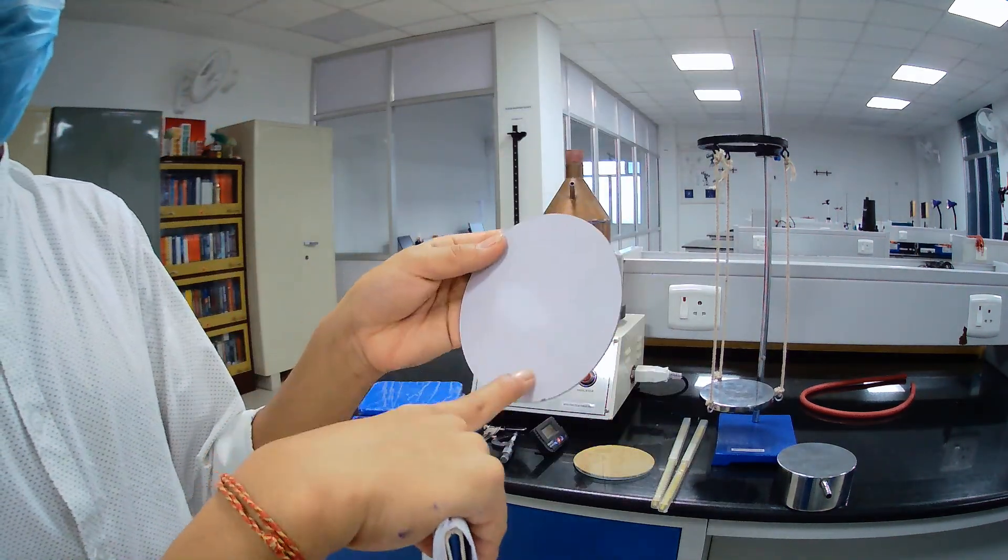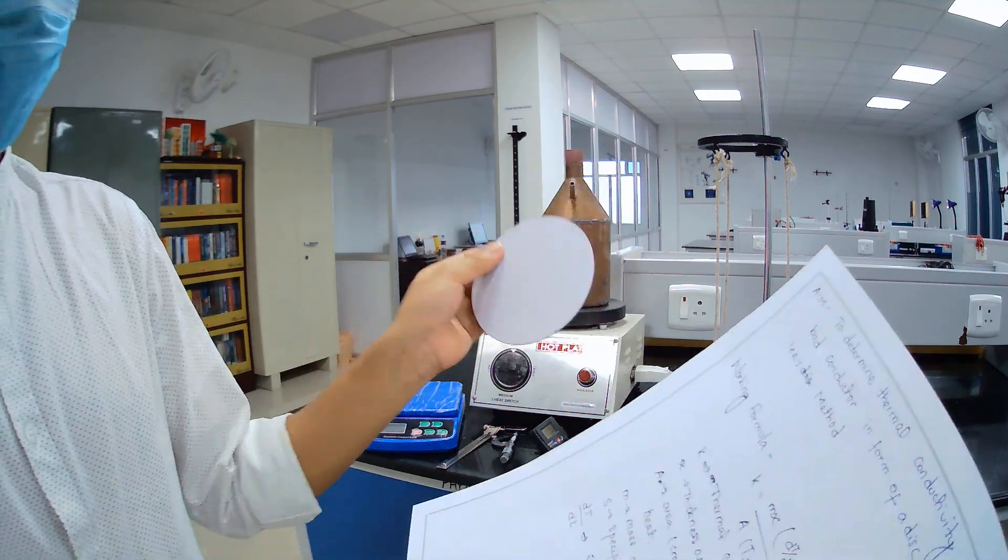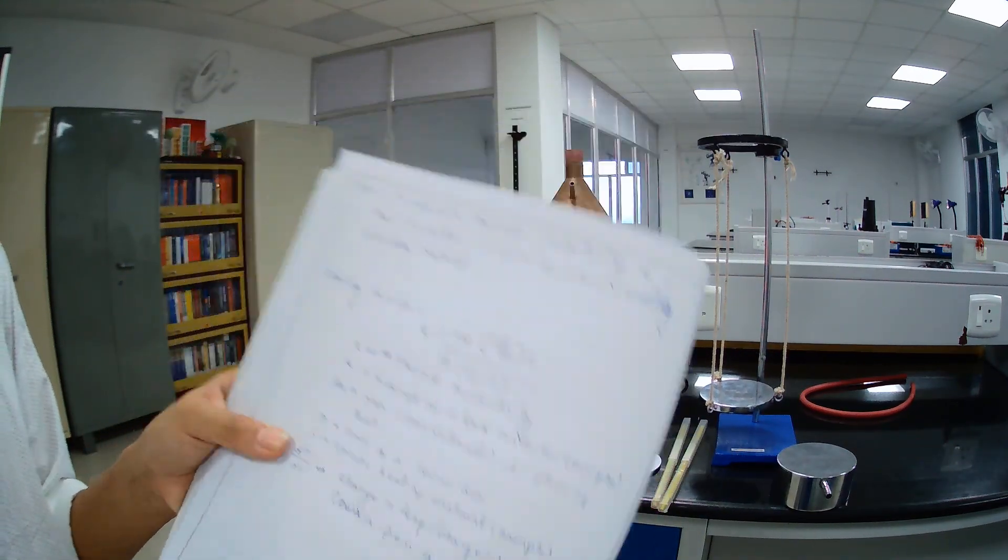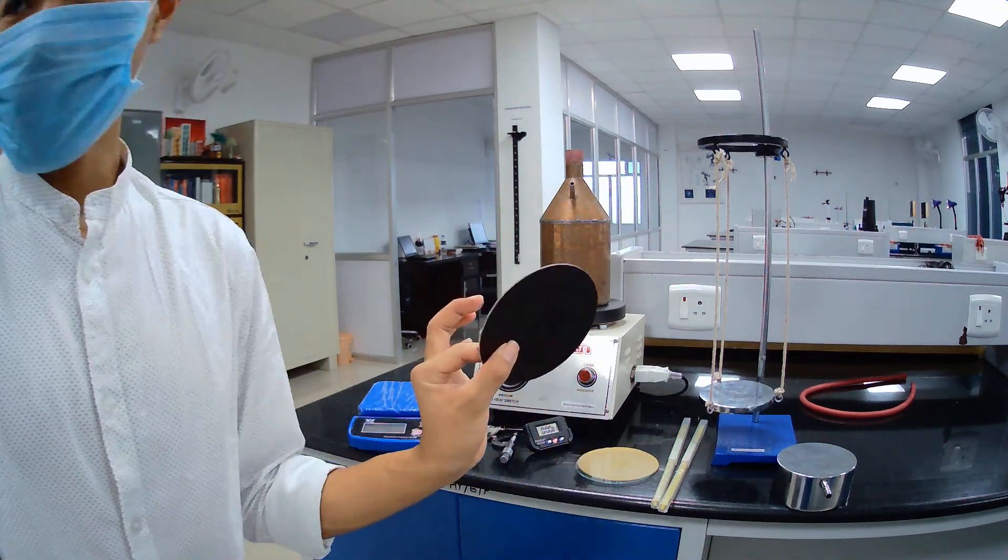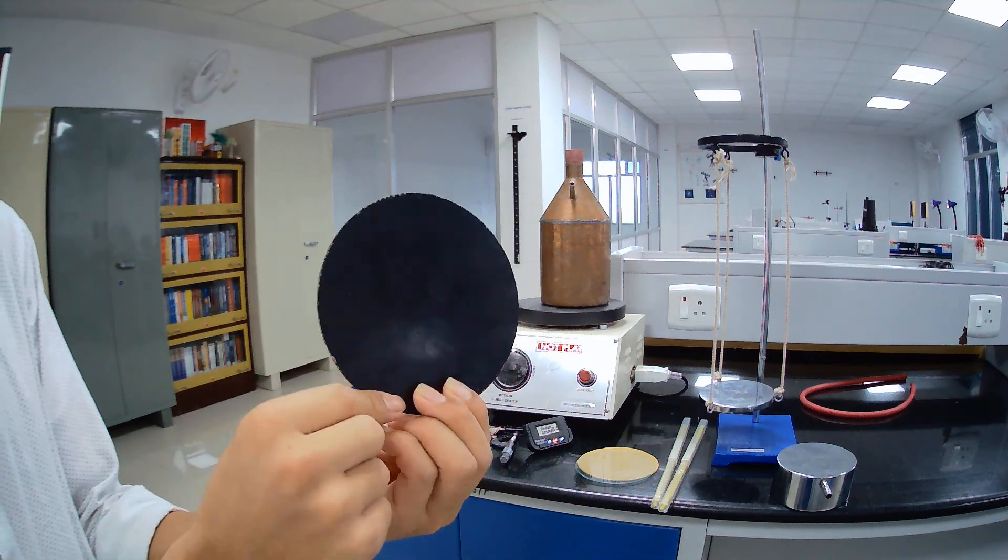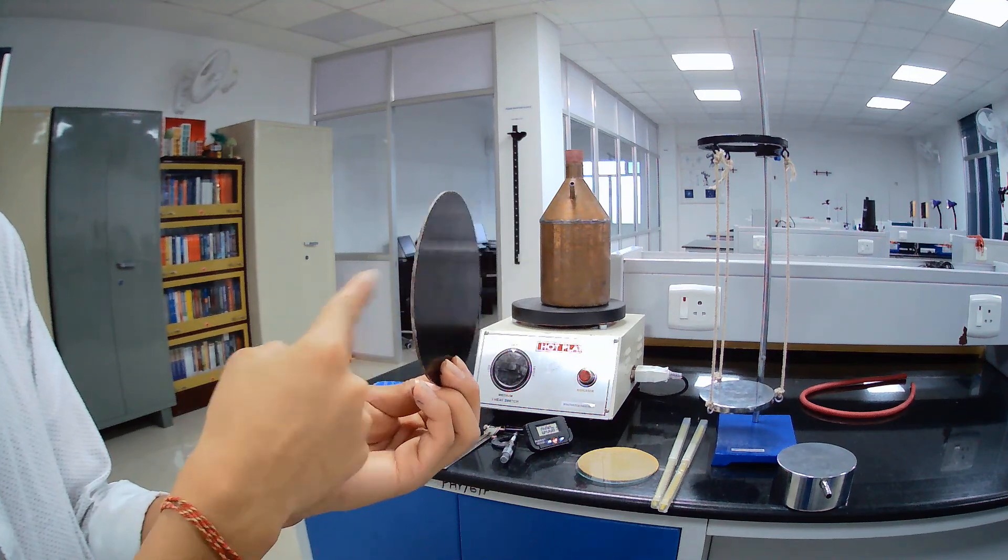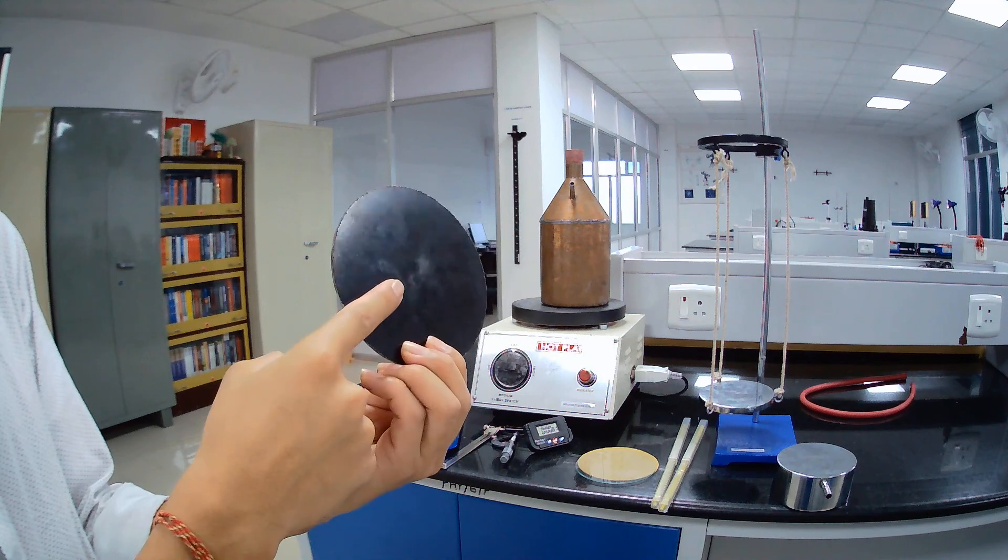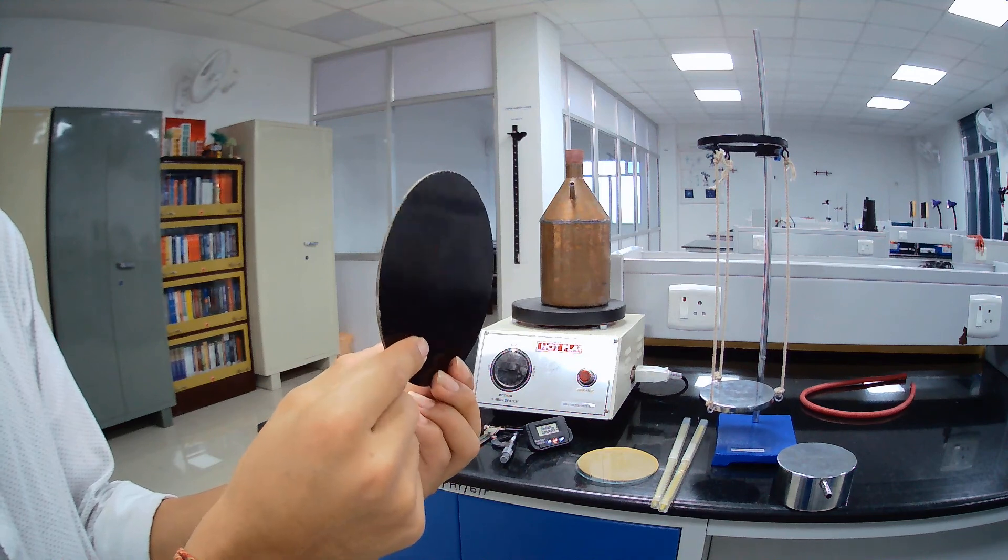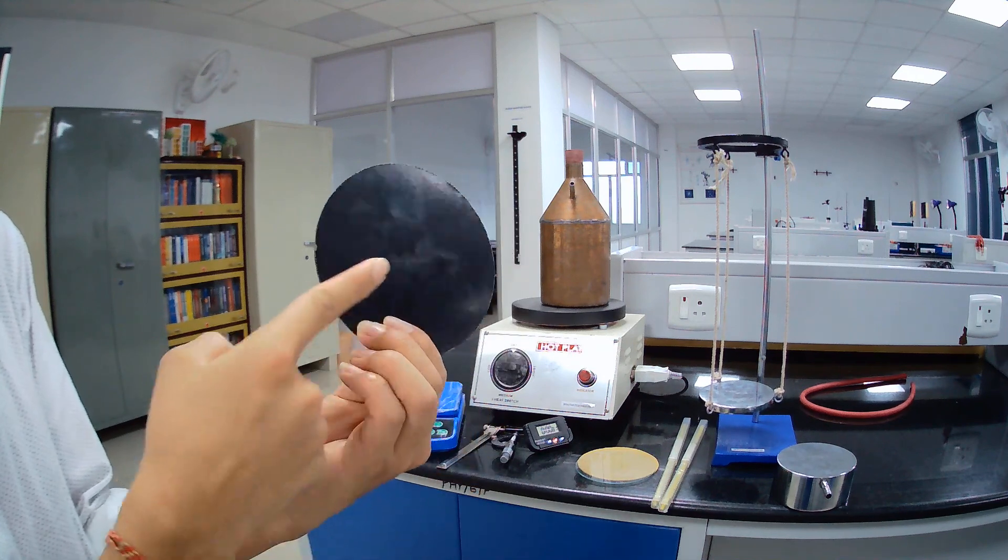T2 minus T1, here we have T1 and T2. T2 is at high temperature then T1. The heat will flow from this surface to this surface. So this is T2 minus T1, temperature of this surface and temperature of this surface.